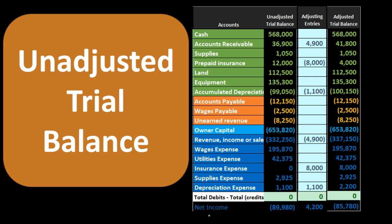You may then hear the term post-closing trial balance, which would be the trial balance after we have closed the process — in which time we have closed out all the income statement accounts, the revenue and expense accounts, as well as the draws account to the balance sheet in terms of the owner capital. They're all going to be basically trial balances. It's a way to indicate where we are at in the process of the accounting cycle when we term something as an unadjusted trial balance, an adjusted trial balance, or a post-closing trial balance.